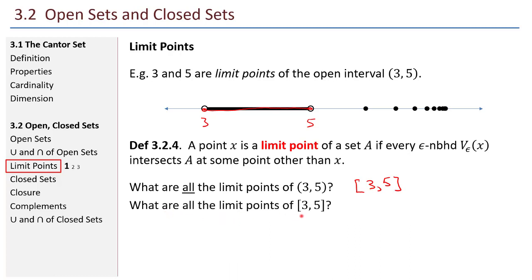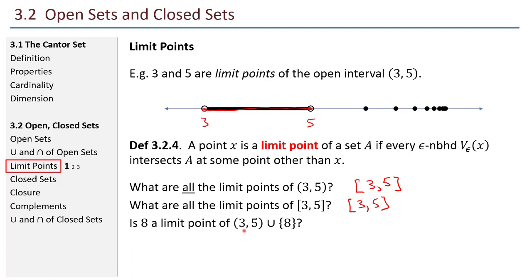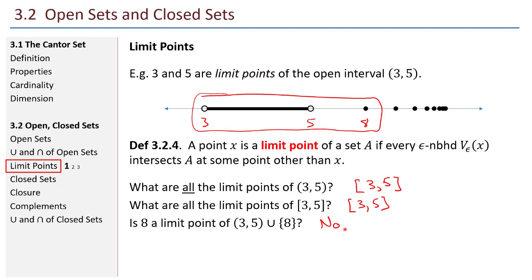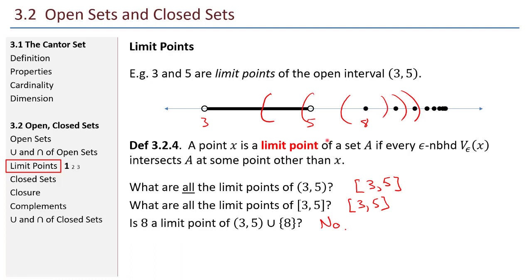What are the limit points of the closed interval from 3 to 5? Are there any new ones? No — it's the same: the closed interval from 3 to 5. Is 8 a limit point of the open interval from 3 to 5 union {8}? The answer is no. If I take epsilon neighborhoods around 8, at some point my epsilon neighborhood becomes so small that it stops intersecting the rest of the set. I can make epsilon small enough so that it does not contain any points of the set other than 8 itself.